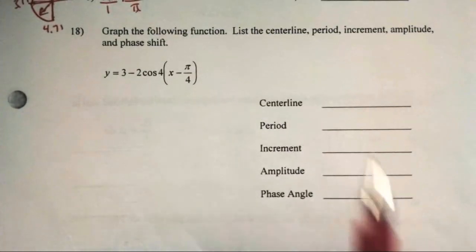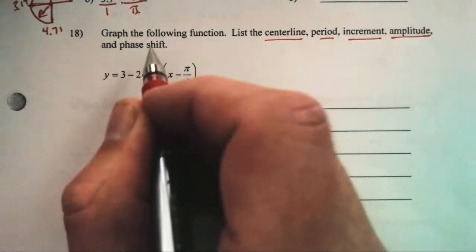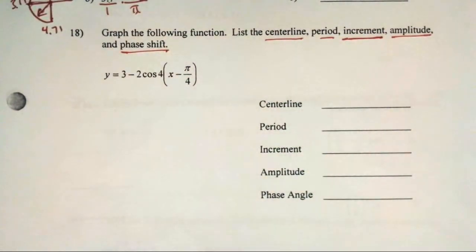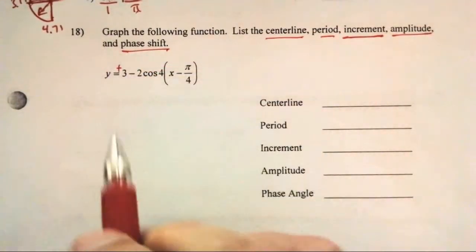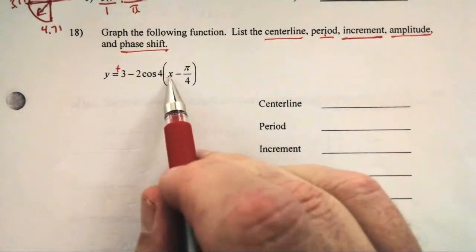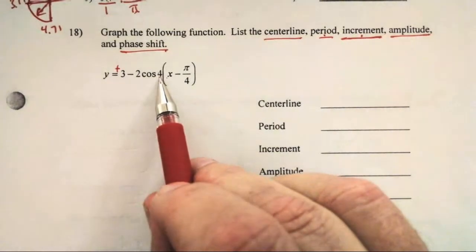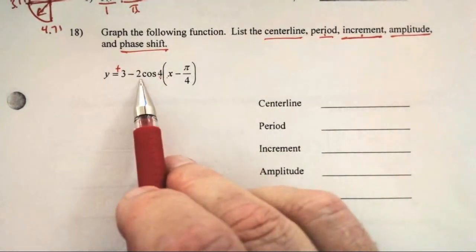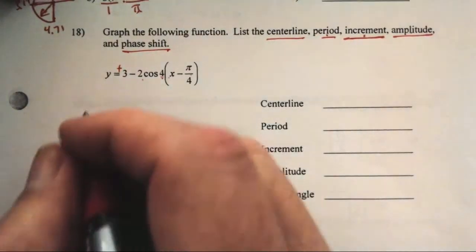Graph the following function. List the center line, the period, the increment — that's our horizontal phase shift — and the amplitude. The center line is +3. The period is 2π divided by 4, giving π/2. The increment is one-fourth of that. Amplitude is 2. The phase shift is π/4 to the right. All of this reveals itself when we stamp this function.